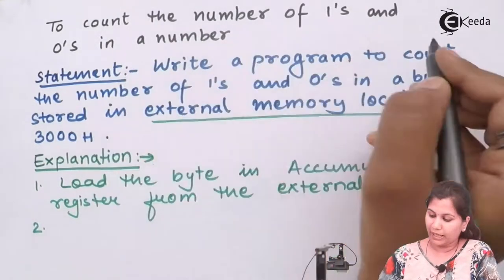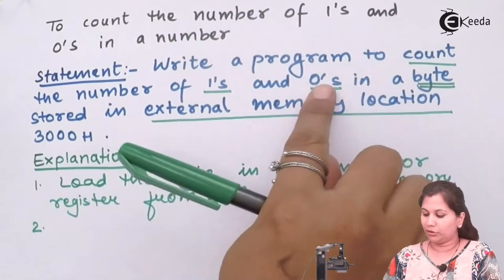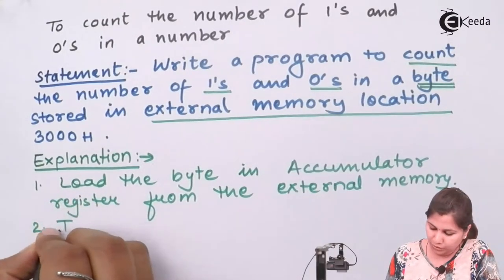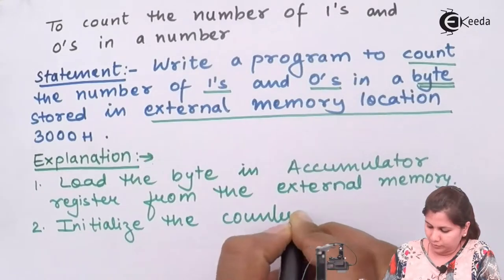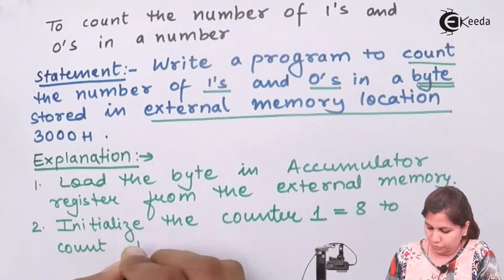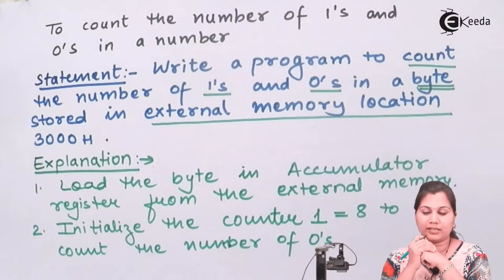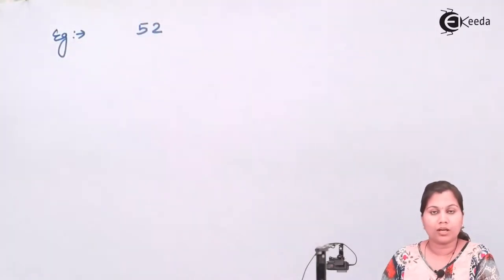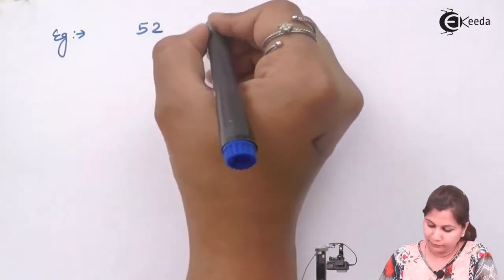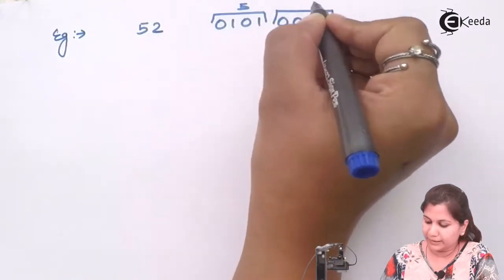The second step: because we have to count the number of 1s and 0s, two counters will be needed — one to count the number of 1s and one for 0s. We initialize counter 1 with 8. To understand why, let's take the example of number 52. In binary, 52 is represented as 0101 0010 — 5 is represented as this and 2 is represented as this.